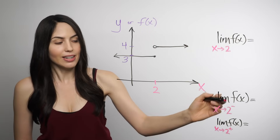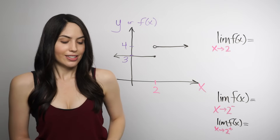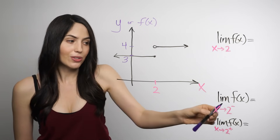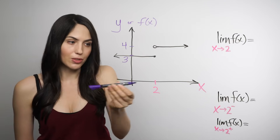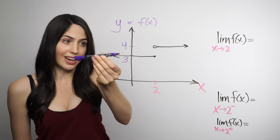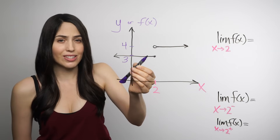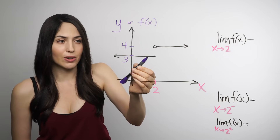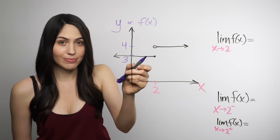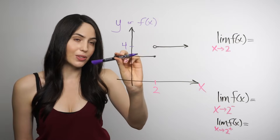Let's find the limit as x approaches 2 from the left. Just like before, you trace from the left toward 2 on the graph. As you do that, you look for what y values it's hitting. Since this is just a flat horizontal line, everywhere along here it is 3 for the y. So the limit from the left is 3.